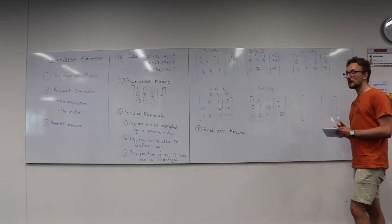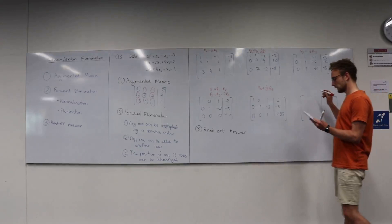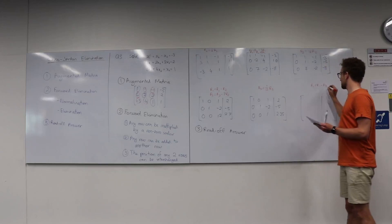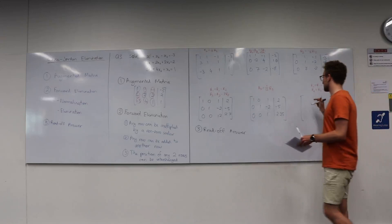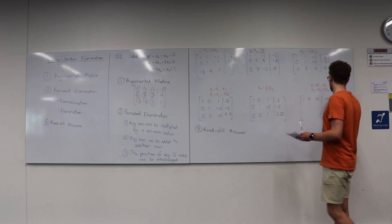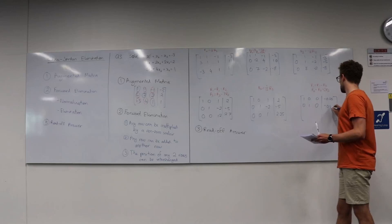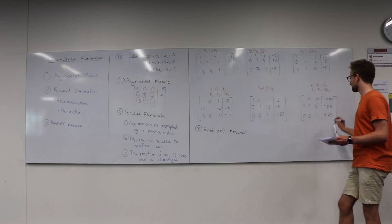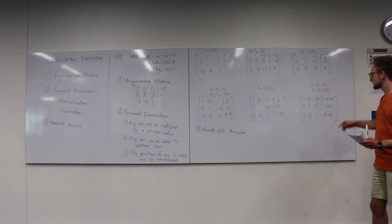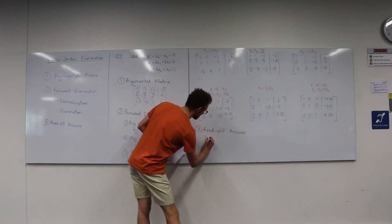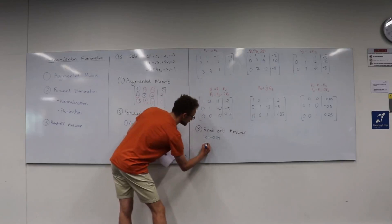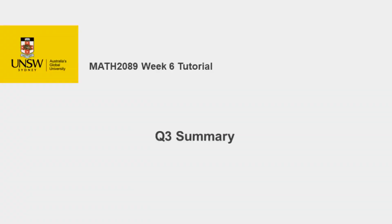Finally, we move on to the elimination stage for column 3: row 1 equals row 1 minus row 3; row 2 equals row 2 plus 2 times row 3. We get 1, 0, 0, negative 0.25 in row 1; 0, 1, 0, negative 0.5 in row 2; and 0, 0, 1, 2.25. The advantage of the identity matrix on the left means we can just read off the answers: x₁ equals negative 0.25, x₂ equals negative 0.5, and x₃ equals 2.25.